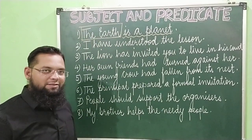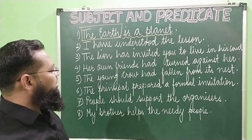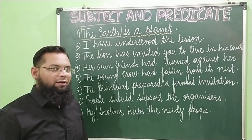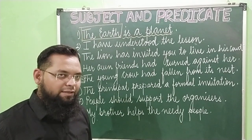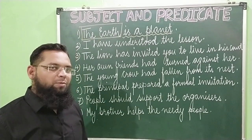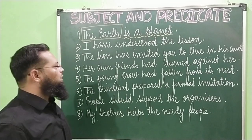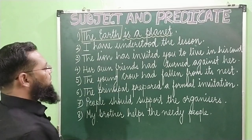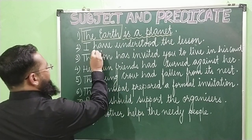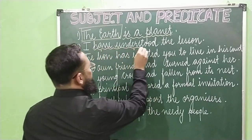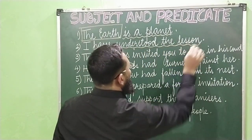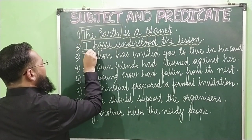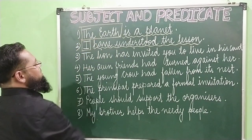Second example: 'I have understood the lesson.' What is the helping verb in the sentence? The helping verb is 'have.' So the predicate begins from 'have' — 'have understood the lesson' will be the predicate. And 'I' will be the subject.